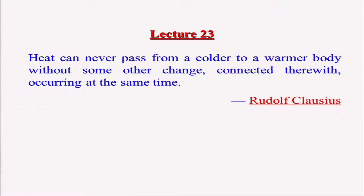Let us start this lecture with a thought process from Rudolf Clausius. He says heat can never pass from a colder to a warmer body without some other change connected herewith occurring at the same time. This is what we call the Clausius statement: it is impossible to transfer heat from the cold region to the hot region without any external aid. We have discussed various aspects of the second law of thermodynamics including the Kelvin-Planck statement and the Clausius statement.